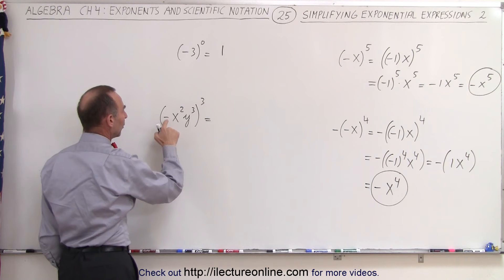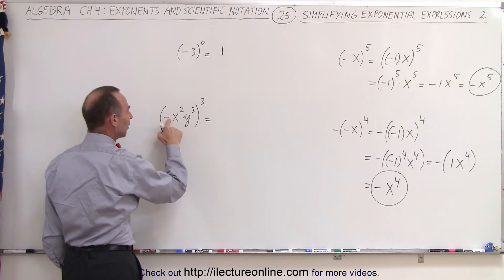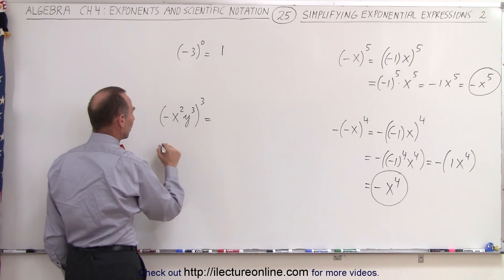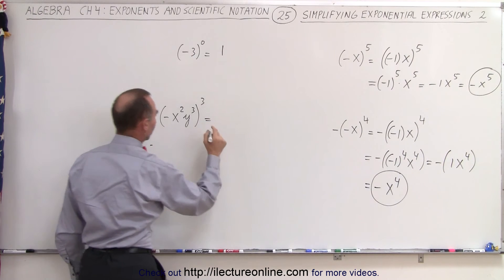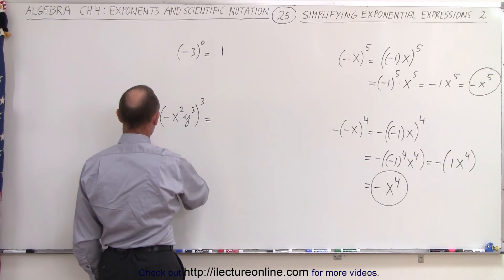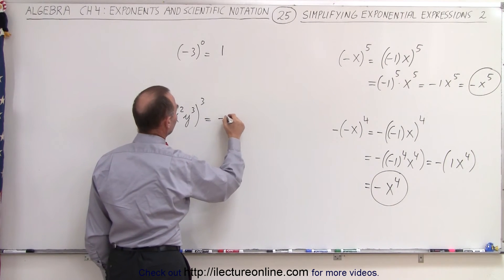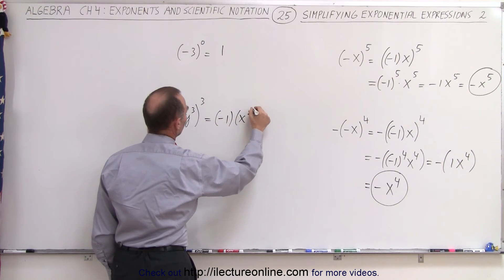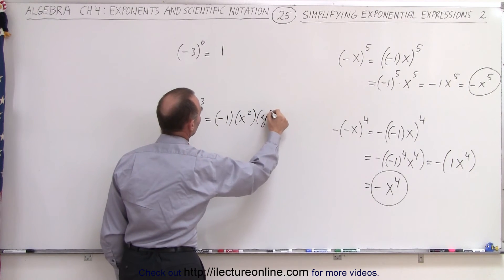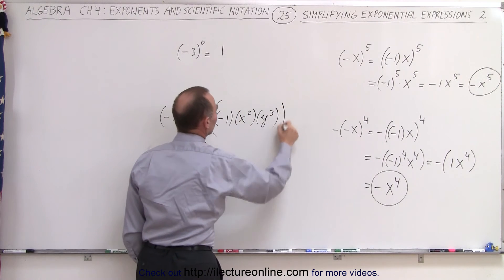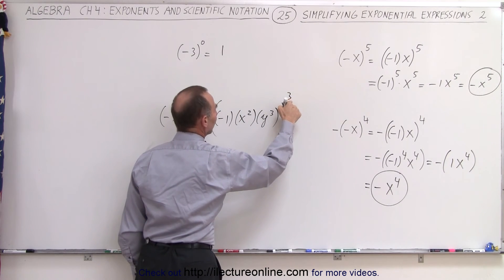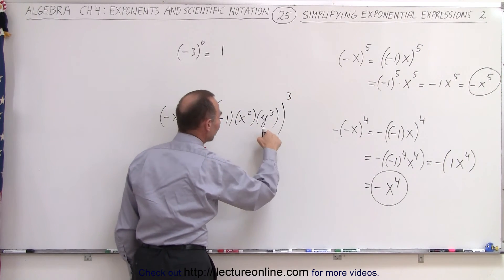And over here again, we have three factors. We have the negative, the x squared, and the y cubed. So this becomes equal to, well, we can write over here. There we go. So we have negative 1, we have x squared, and we have y cubed. And everything is raised to the third power. So this exponent applies to all three factors.